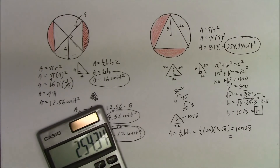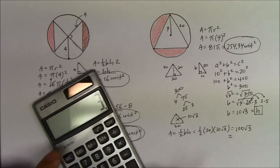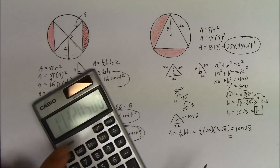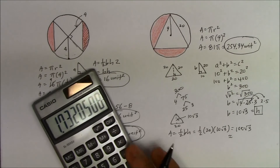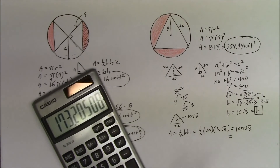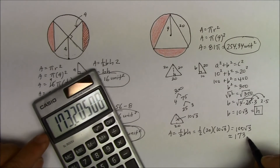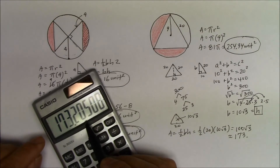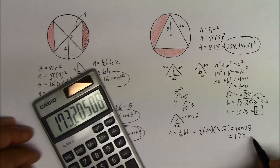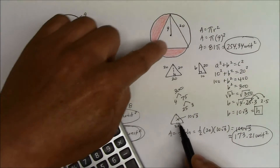Let's convert that to a decimal. The square root of 3, times 100, gives approximately 173.21 units squared. That's the area of the equilateral triangle on the inside.